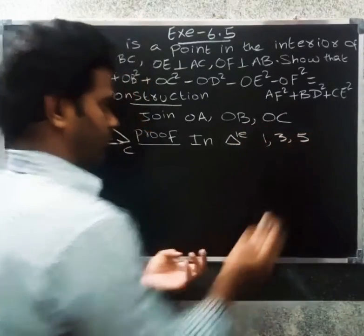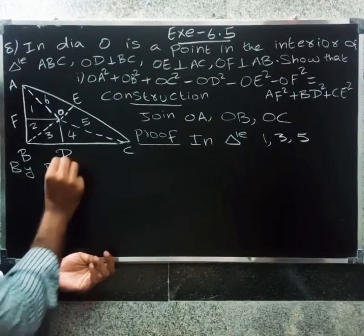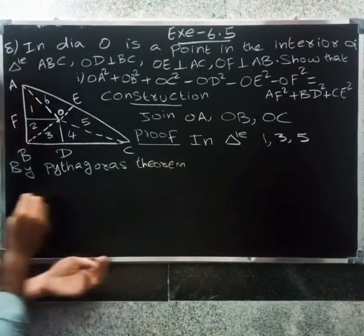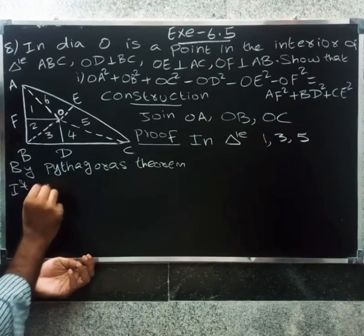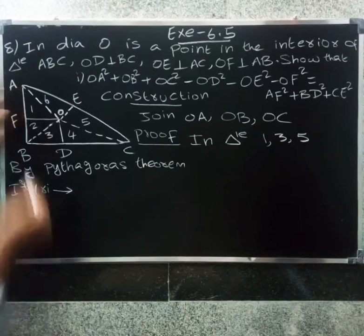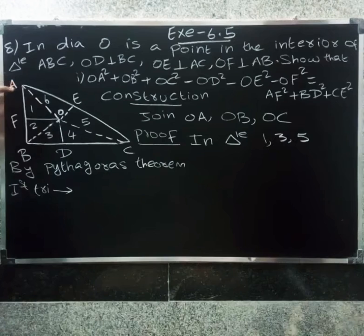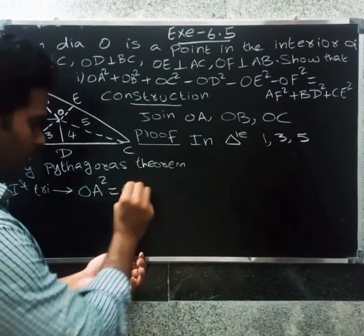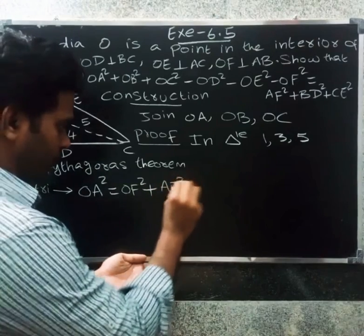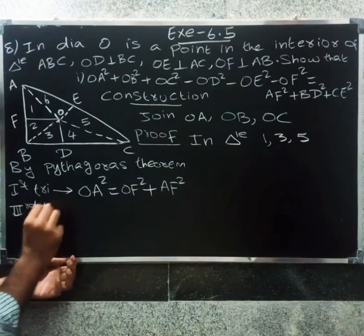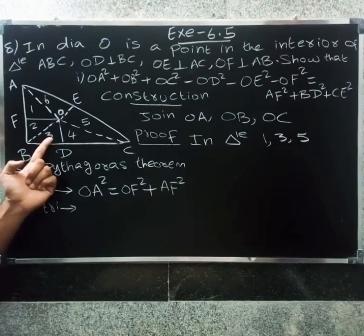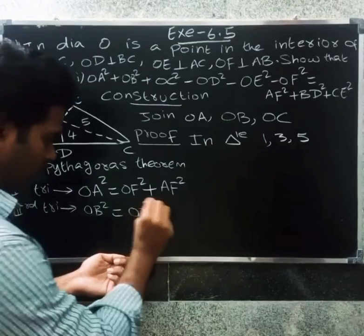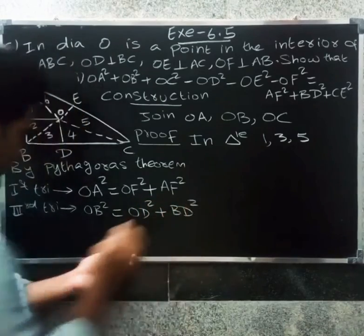By Pythagorean theorem, in the first triangle with hypotenuse OA: OA² = AF² + OF². Next, the third triangle with hypotenuse OB: OB² = OD² + BD².